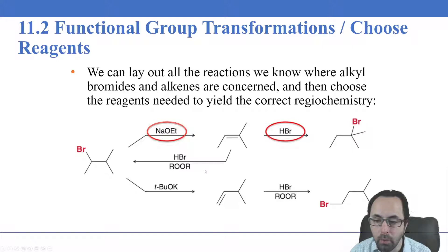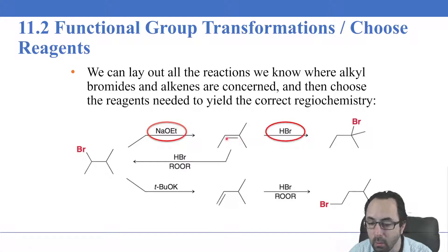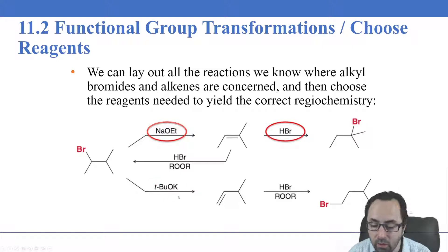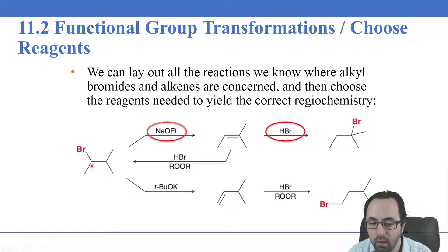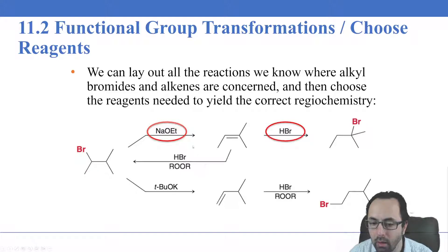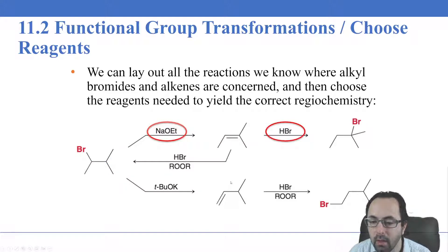For the elimination we have two options. We can go with a non-sterically hindered base, which will get us the double bond at the more substituted position — that's what we want. Using a sterically hindered base like tert-butoxide would give elimination producing a double bond at the less substituted position. With NaOEt we'd remove the hydrogen on the adjacent carbon and the bromine, getting a double bond at the more substituted position.